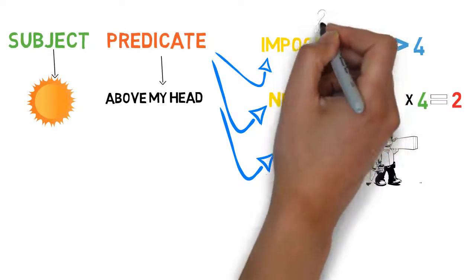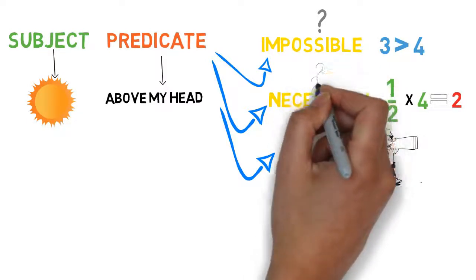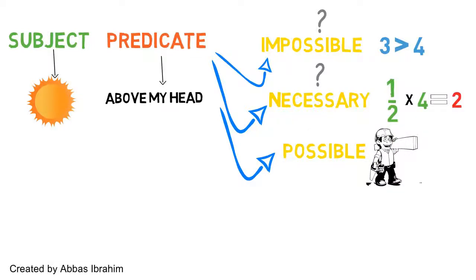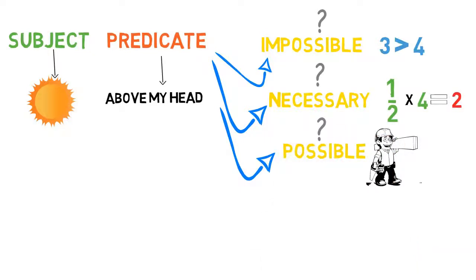So going back to the statement, the sun is above my head. Is it impossible for the sun to be above my head? No. Is it necessary for the sun to be above my head? No, because it's not always above my head. Is the sun possible to be above my head? Yes, because it depends on movement for it to be realized.